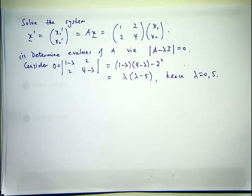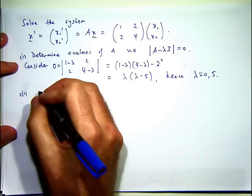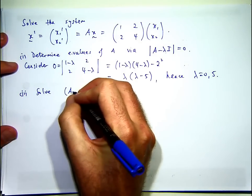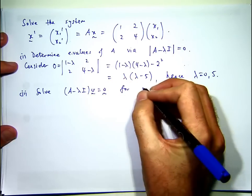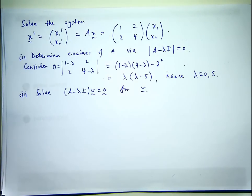So those are my eigenvalues for the matrix A. Let's determine the eigenvectors, the corresponding eigenvectors. We treat each case separately. We consider lambda equals zero and find an eigenvector V satisfying that, then we consider the case lambda equals five separately and find an eigenvector corresponding to that eigenvalue.